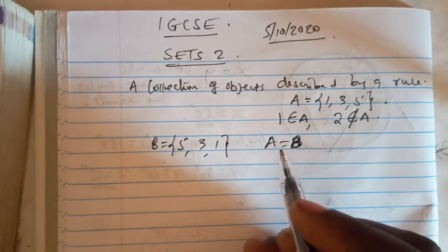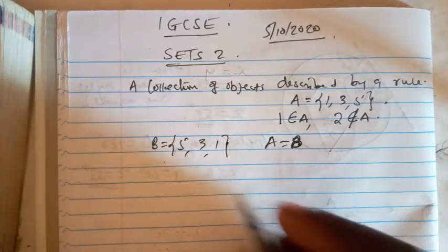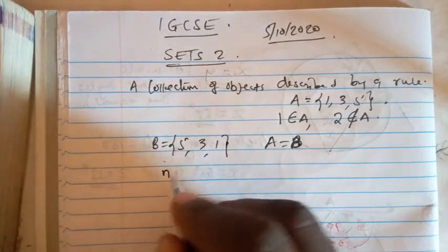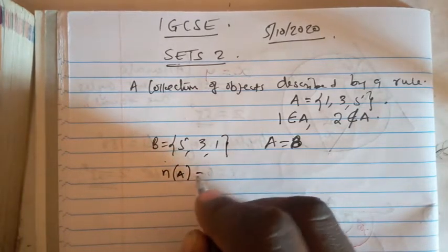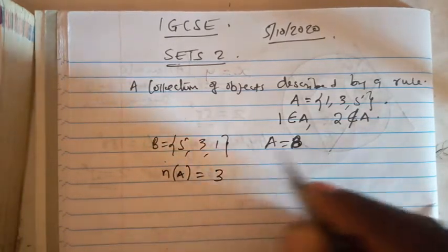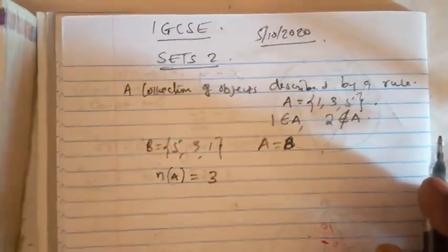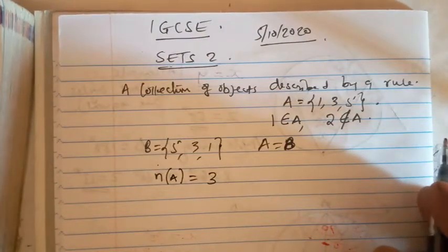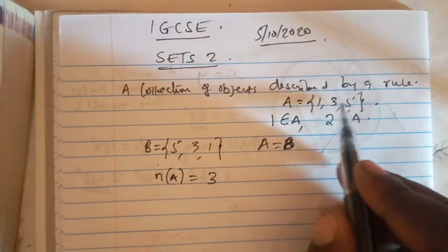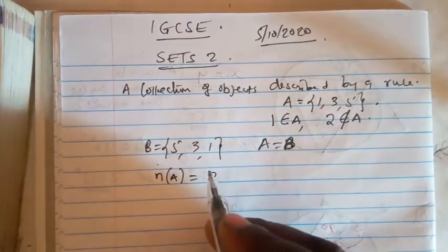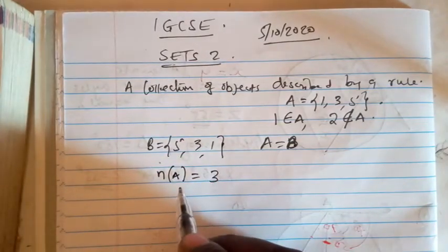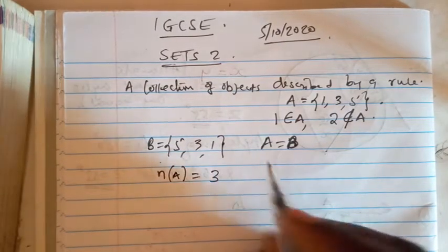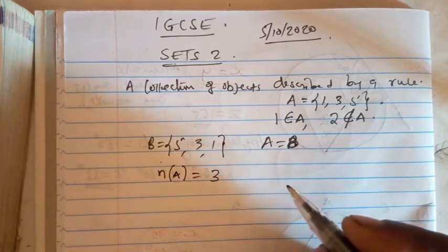The number of elements of set A is given by counting its members. For A = {1, 3, 5}, the number of elements is 3 — we just count how many members are in the set. This is how you find the number of members in a specific set.